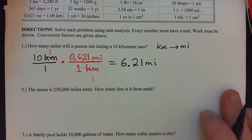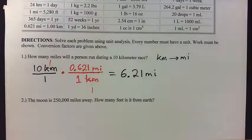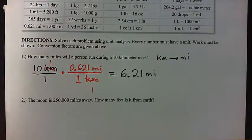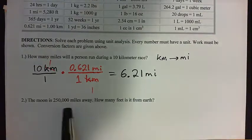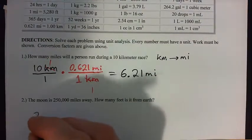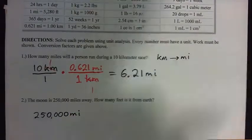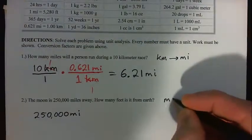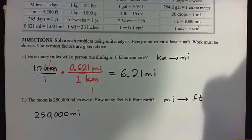Now let's look at question two. The moon is 250,000 miles away — how many feet is it from Earth? Let's think about this. What we have is 250,000 miles, and we want to convert from miles to feet.